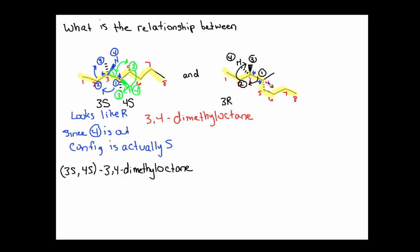At this other stereocenter, since we have two bonds in the plane, one bond pointing back, our hydrogen's pointing out. That's our priority 4 group. This would be our priority 1 group. This is our priority 2 group. Priority 3. Going from 1 to 2, 2 to 3, it looks like S, but since priority 4 is pointing out, it's actually R. So we have 4R.